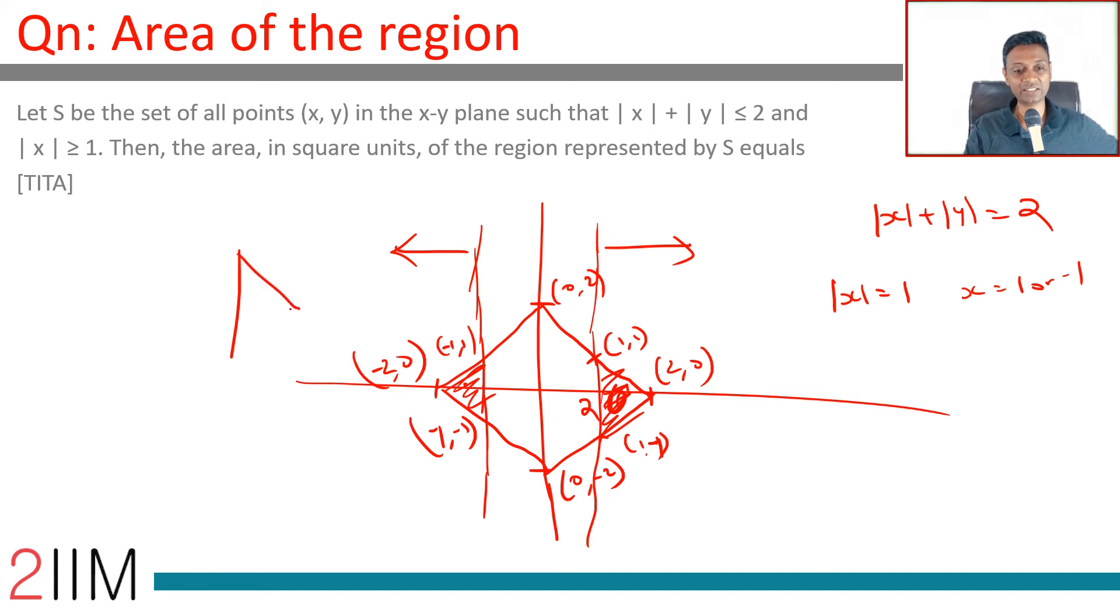So we have a triangle with base 2 and height 1. Area would be 1/2 × 2 × 1, just 1 square unit.